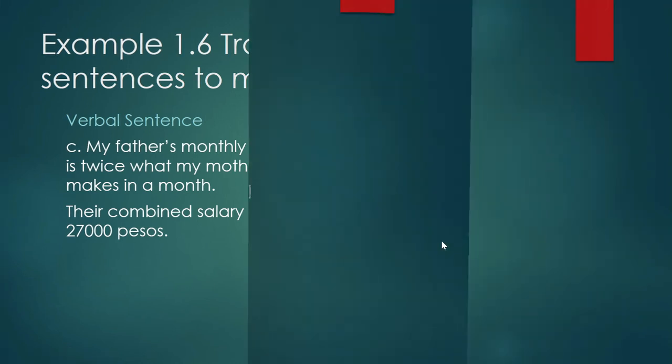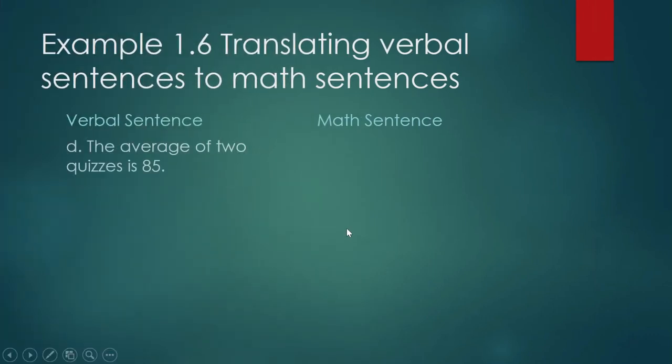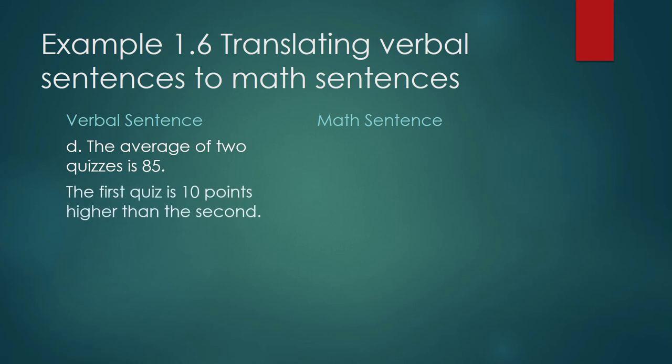Okay, let's move forward. Letter D, the average of two quizzes is 85. The first quiz is 10 points higher than the second. Okay, look at this. The average of two quizzes is 85.